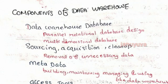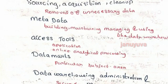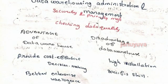Components of a data warehouse: first, data warehouse design using a parallel relationship design and multidimensional database. The source involves cleanup — removing unnecessary data, metadata building, maintenance, and management. Access tools include application size and online analytical processing (OLAP). The data model covers a particular subject area. Data warehouse administration handles security, priority management, checking data quality, and quality checks.